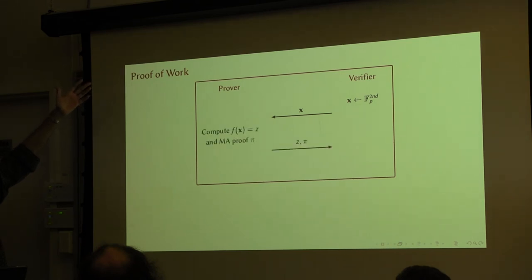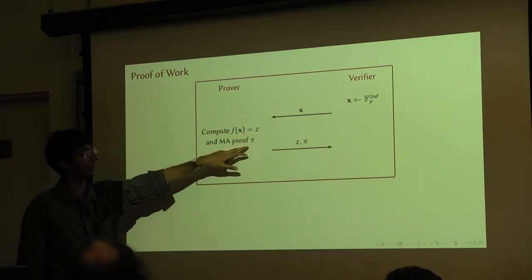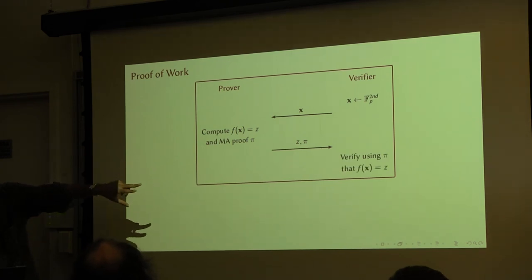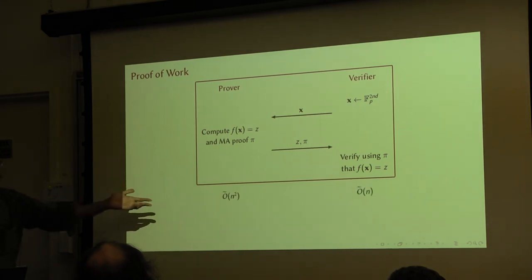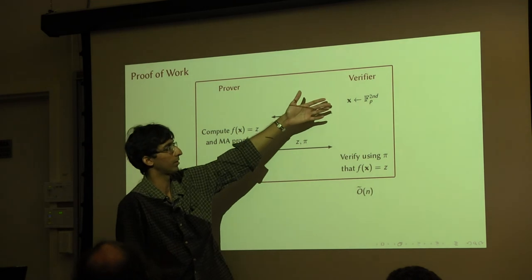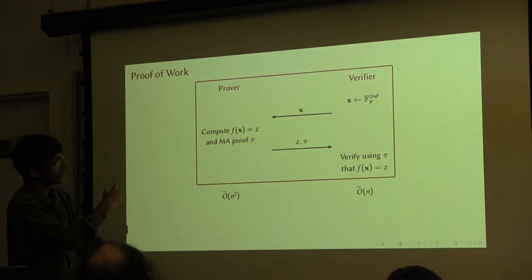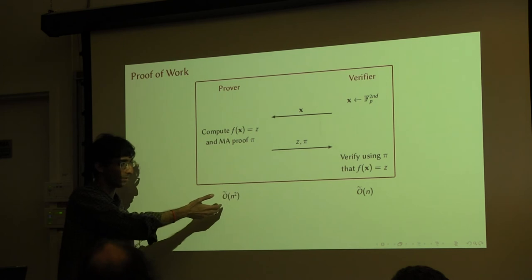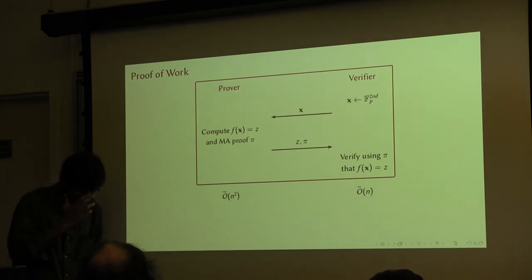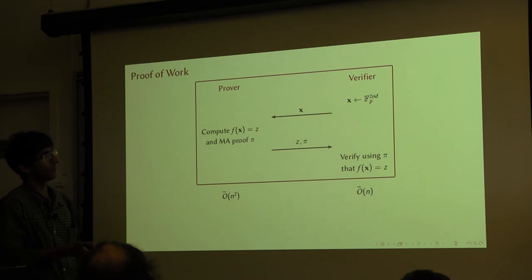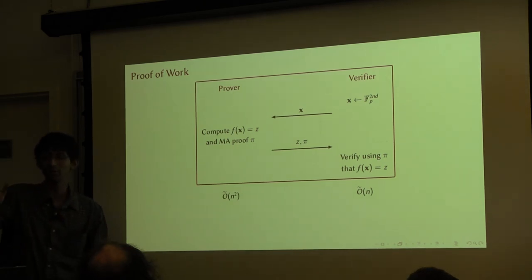What are the efficiencies? The verifier's task takes linear time by the previous theorem. The theorem also says that the prover's task takes n-squared time — you can compute this proof π in n-squared time. One other property is that if the prover actually runs in less than n-squared time, then it can't even compute z correctly. Assuming that orthogonal vectors takes n-squared time, the prover cannot even compute z correctly on this random input — that is what we proved.